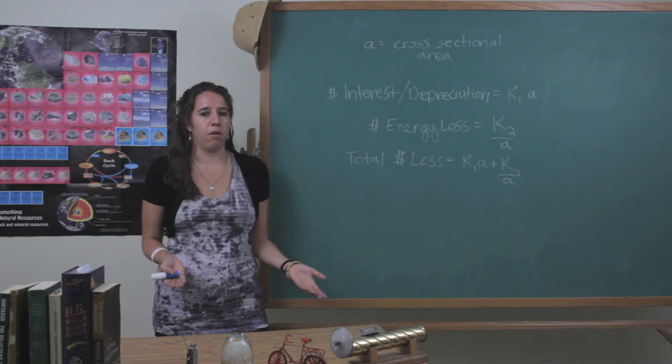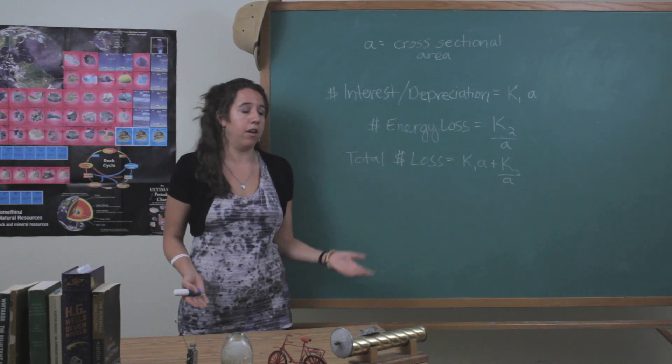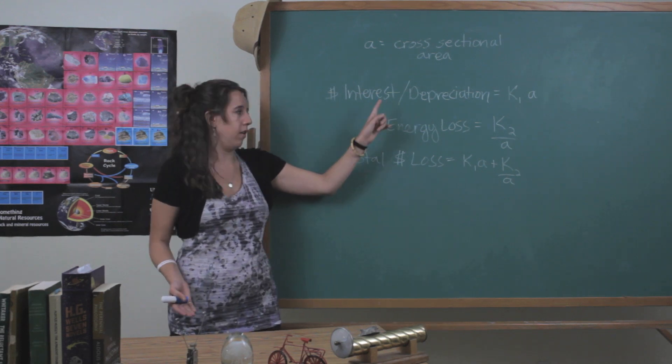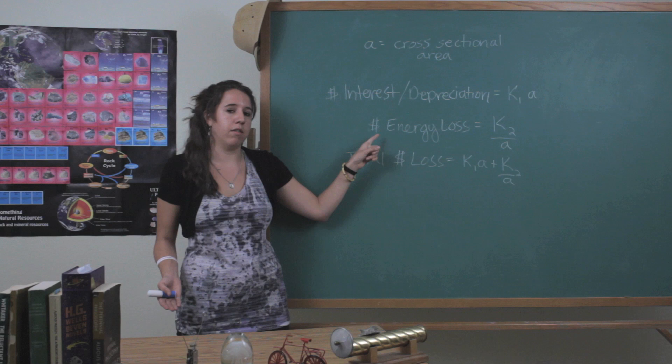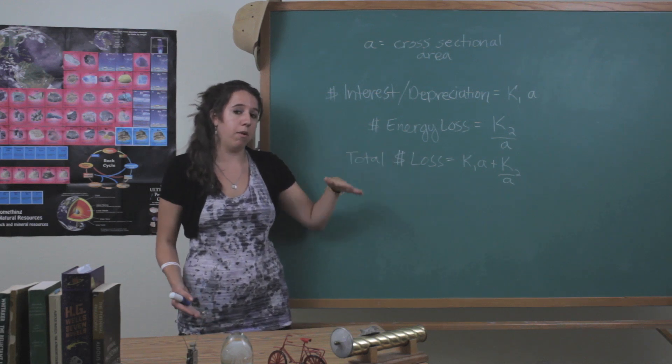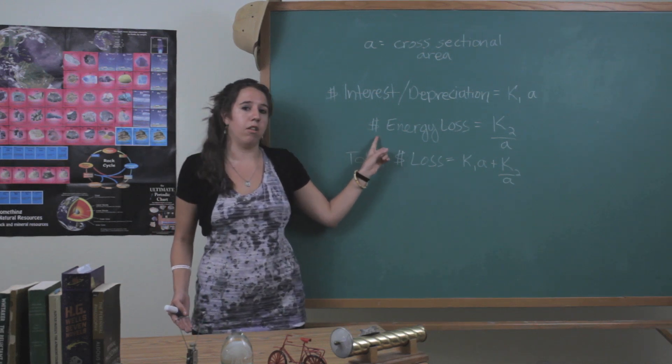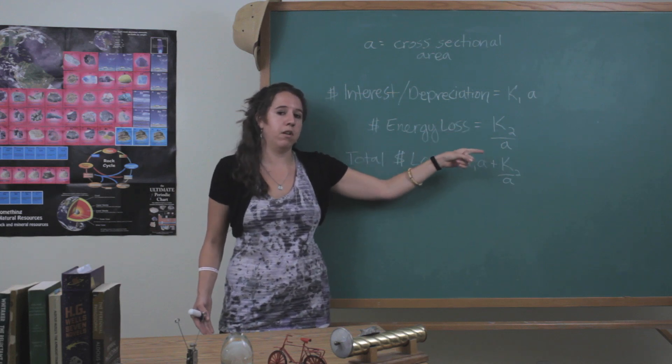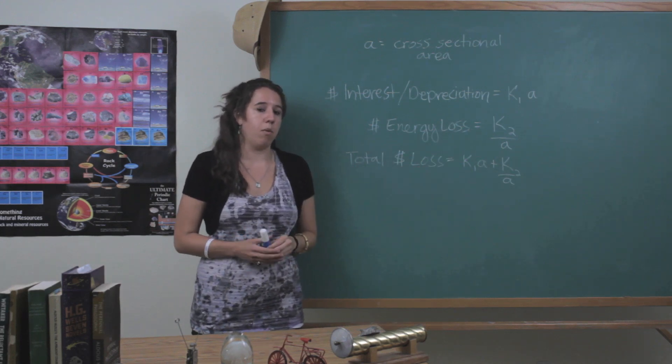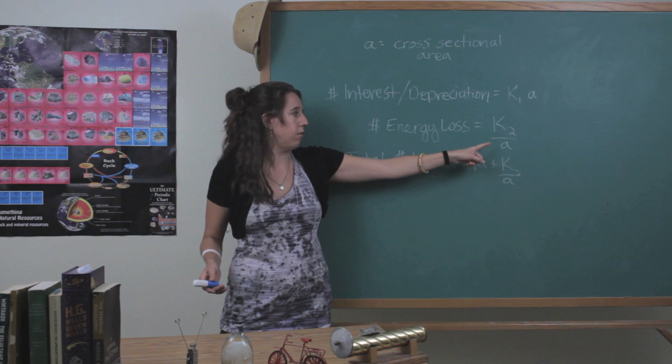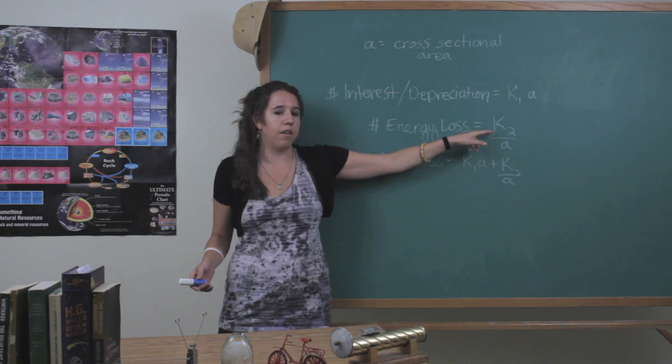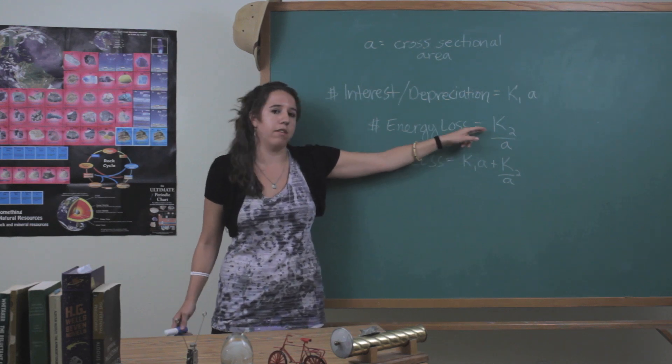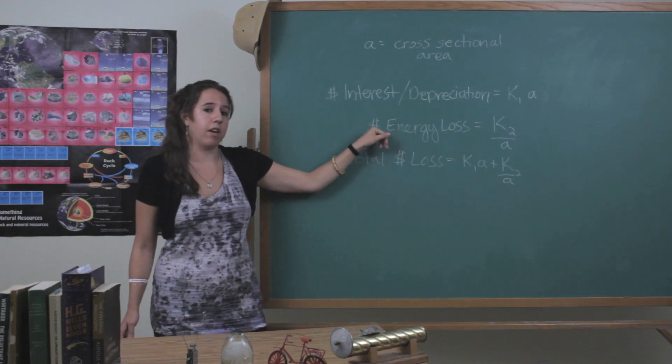So then initially you might think, okay, we'll just make the wire smaller then and then this will be smaller. But then this quantity here is going to limit you as well on the lower end because the energy loss in that conductor is inversely proportional to the cross-sectional area of the wire. So then if you make the wire too small and then you divide this constant by the area, then this is going to get really big.